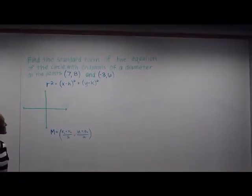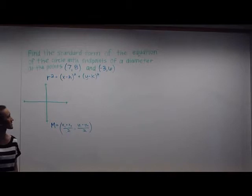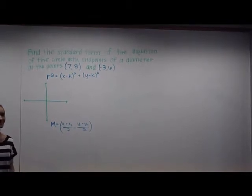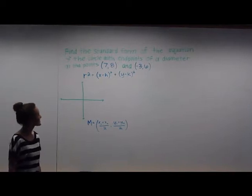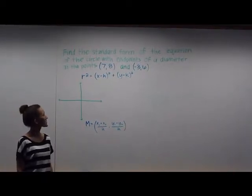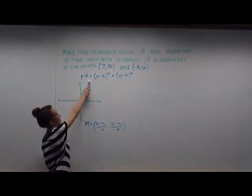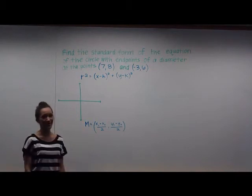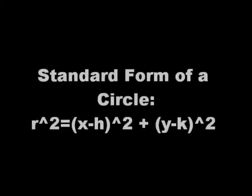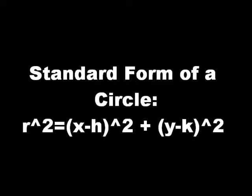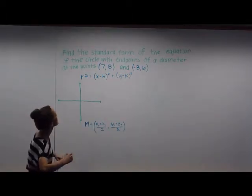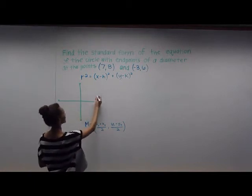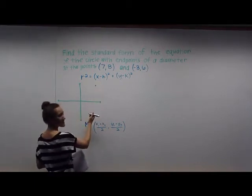We're going to find the standard form of the equation of the circle with endpoints of a diameter at points (7,8) and (-3,6). The standard equation of a circle is r² = (x-h)² + (y-k)². Let's draw this circle and graph the points (7,8) and (-3,6).